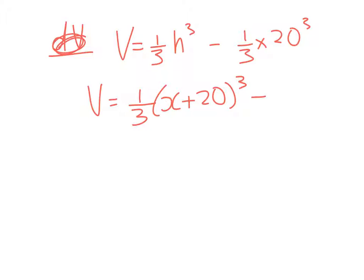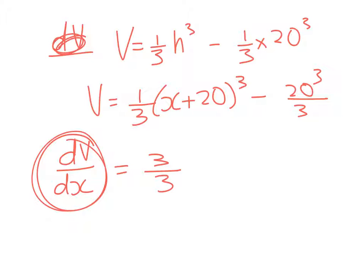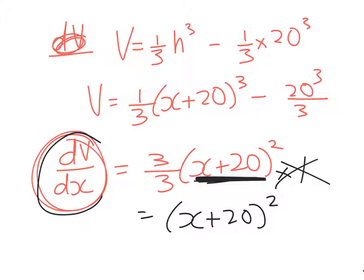The last one we've got to look at is dx/dV. We had the volume of the trough was equal to 1/3 times h cubed minus 1/3 times 20 cubed. So the volume is equal to 1/3 times x plus 20 cubed minus whatever that number is, and we don't really care about that. The reason we don't care is because we're really interested in getting the link between the x and the V. So it's going to be 3 over 3 times x plus 20 squared, using the chain rule, but the derivative of the inner function is just 1. This simplifies to x plus 20 squared. We don't want dV/dx though. We want its reciprocal dx/dV. So that's going to be 1 over x plus 20 squared.